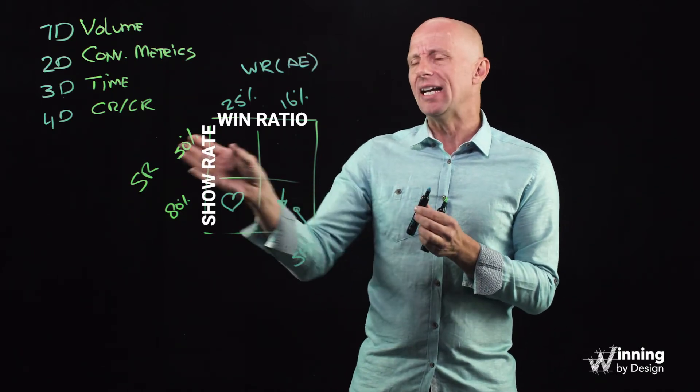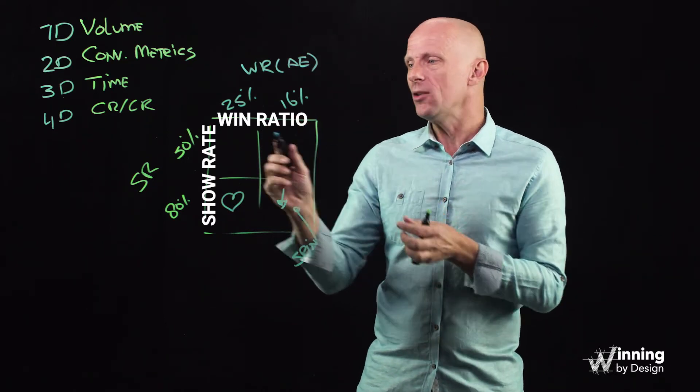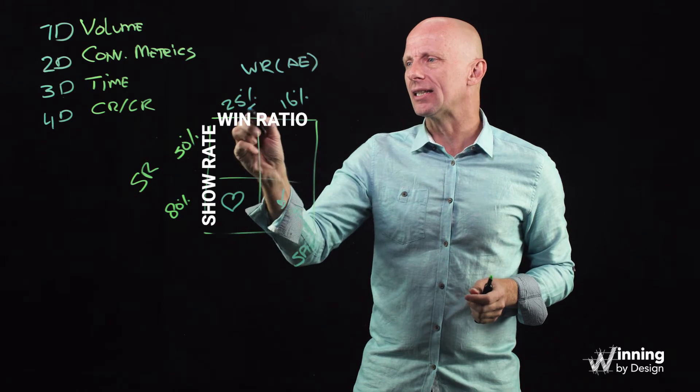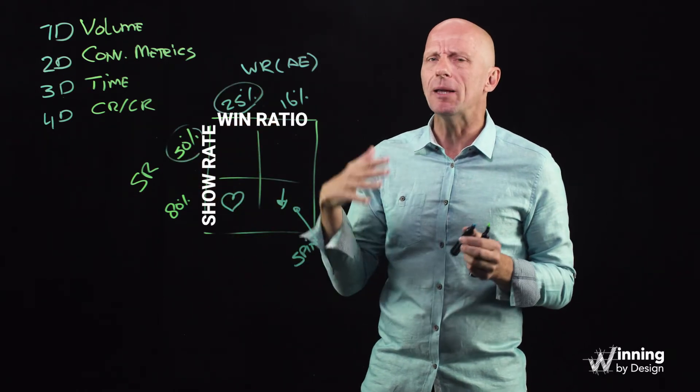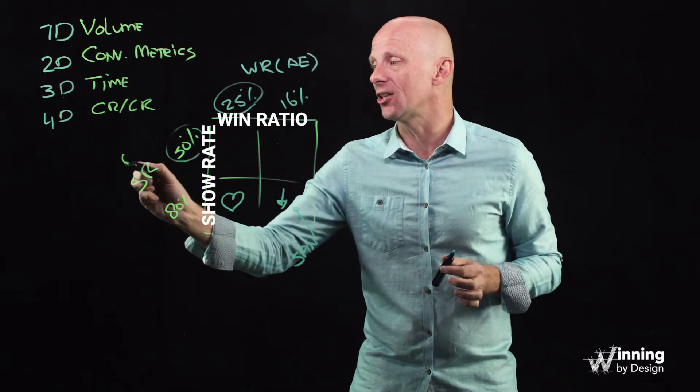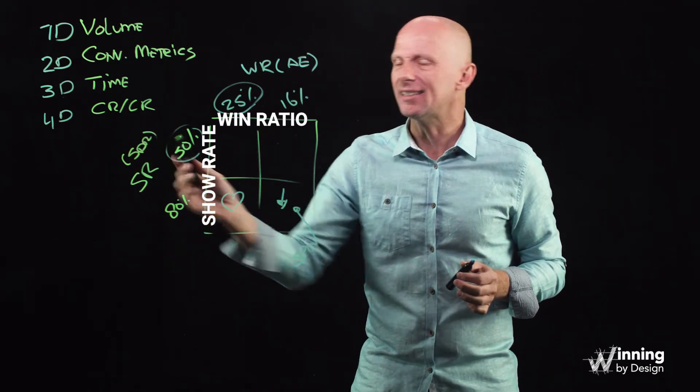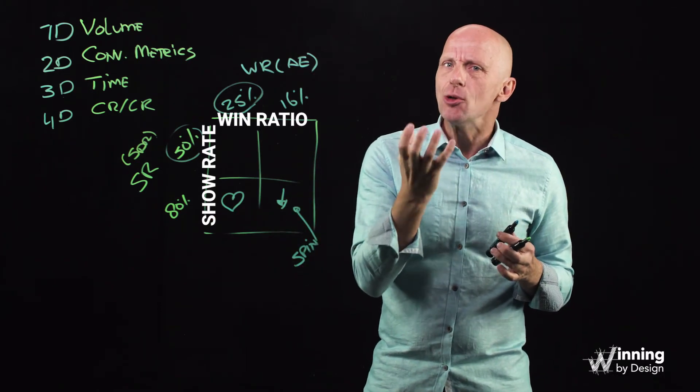Now, on the opposite side, if I have a lot of meetings not showing up, but the win rate is really high, so I see like down here, look, 25%, but only 50% are showing up. That means that the pipeline is inefficient. That means that essentially, my SDR down here that are working this, can essentially put through a little bit more opportunities. They are qualifying too tight.